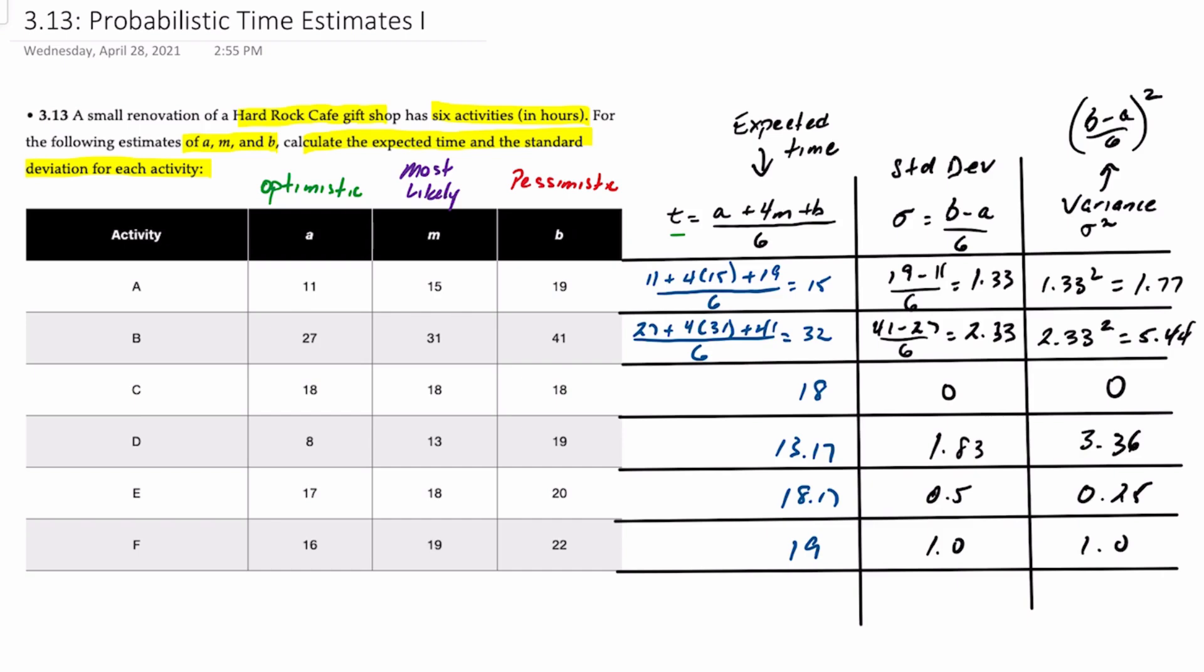So that is how to calculate the expected time, standard deviation, and even the variance of activities under probabilistic time estimates when given the optimistic, pessimistic, and most likely times.